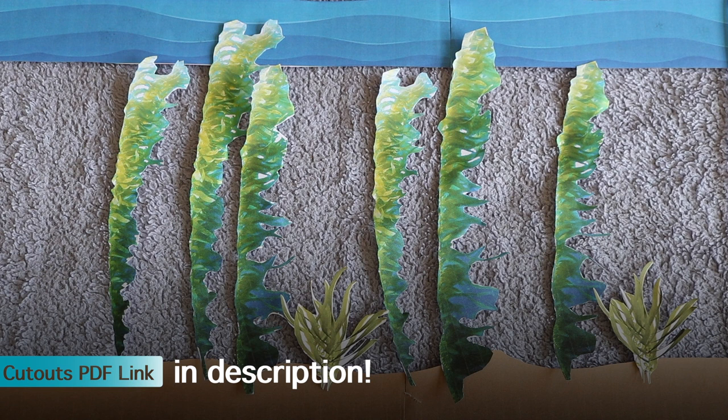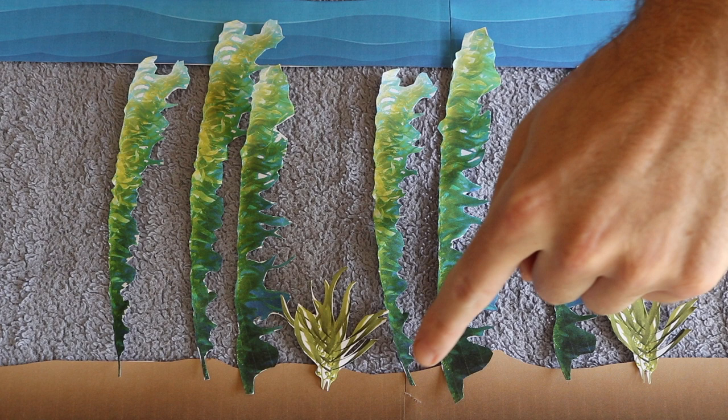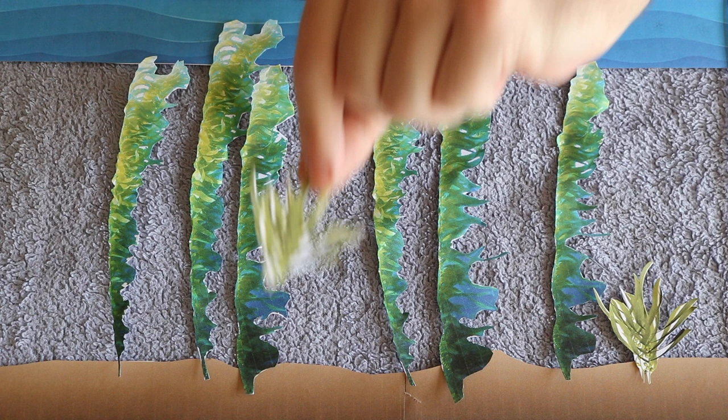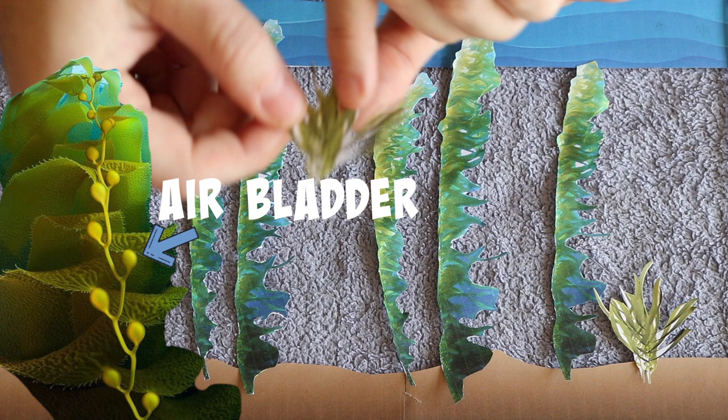The kelp forest is one type of ocean habitat that is close to shore and it is centered around the kelp plants. At the bottom of the kelp plant is something called the holdfast, which helps to hold the kelp to the seafloor, almost like plant roots. You can also see small round structures on the plant which are filled with air to help the kelp float when it gets too heavy.